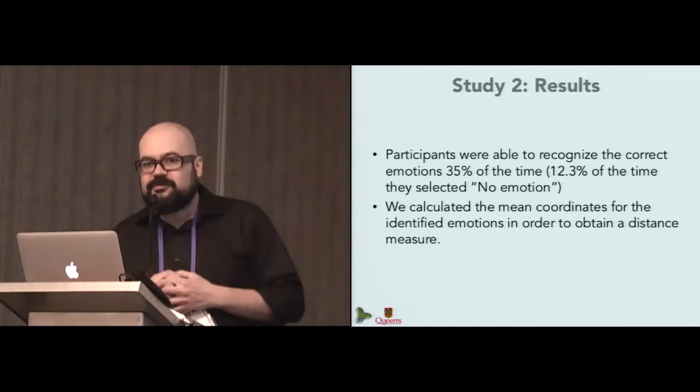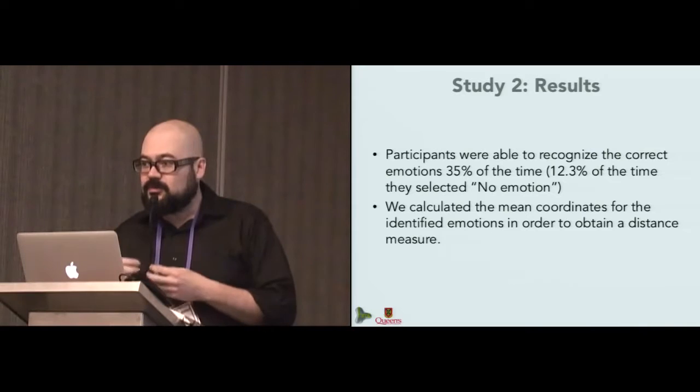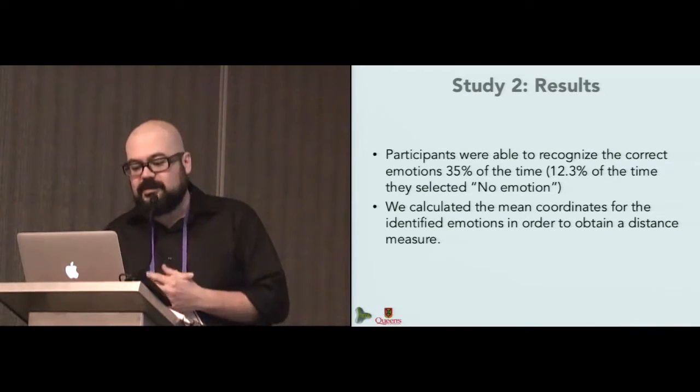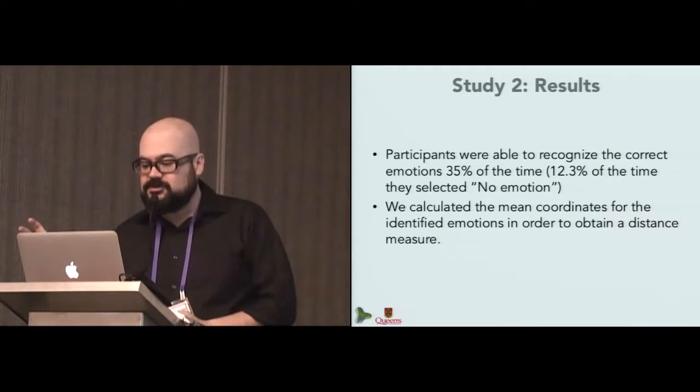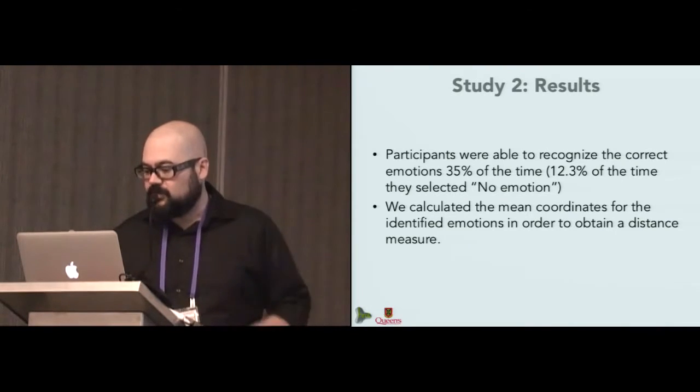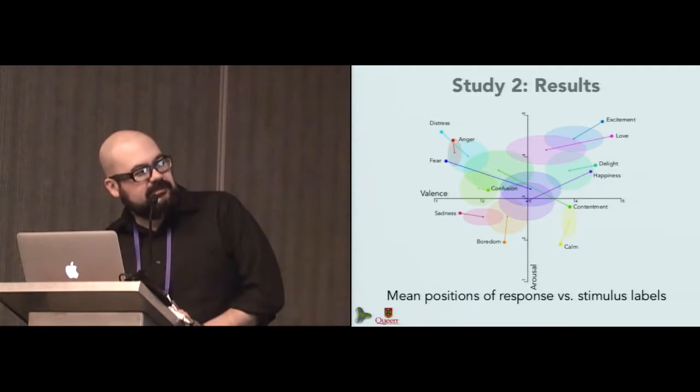But getting the precise label is very difficult, but we were more interested in finding out if the emotion qualities could be identified. So what we did was that we calculated the mean coordinates for the identified emotions, for valence and arousal, in order to obtain a distance measure between the original measure for the emotion and the perceived measure.